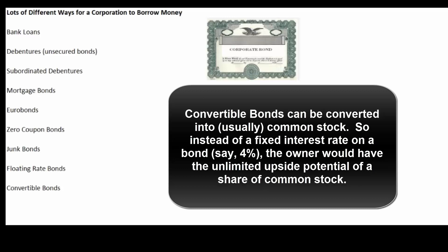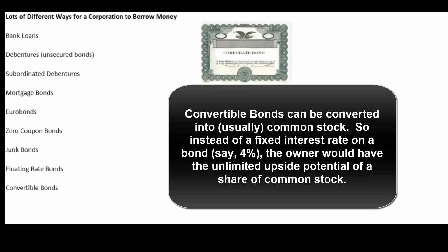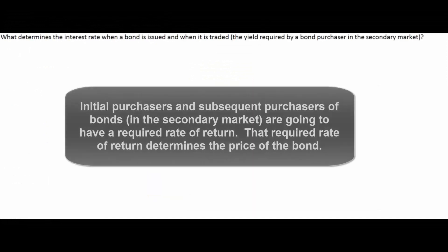Or the bonds might be convertible bonds, where the borrower says that at some point during the life of the bond the holder can convert it into common stock of the company. If a bondholder buys a fixed rate bond at four percent, they won't do much better than that — if interest rates go down they can sell and make a little money, but there is basically a ceiling on gains. However, if converted to common stock, there is really no ceiling to the upside of how much the investor can make.